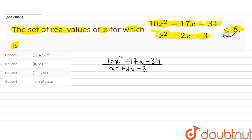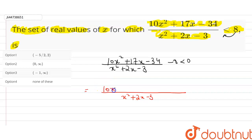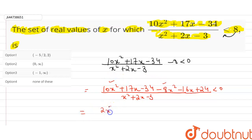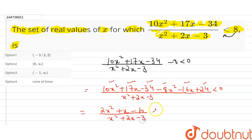We are shifting 8 to the LHS, so it becomes (10x² + 17x − 34) / (x² + 2x − 3) minus 8 less than 0. Taking LCM as x² + 2x − 3, the numerator becomes 10x² + 17x − 34 minus (8x² − 16x + 24), which simplifies to 2x² + x − 10, all over x² + 2x − 3, less than 0.